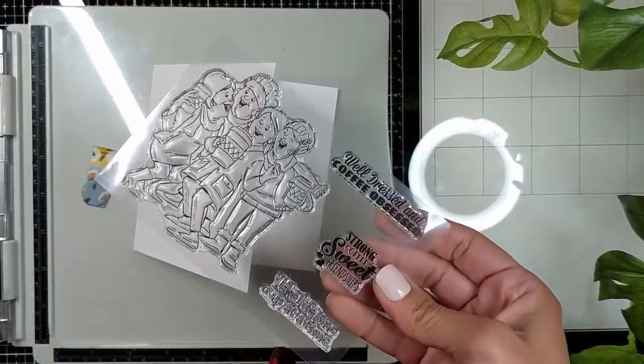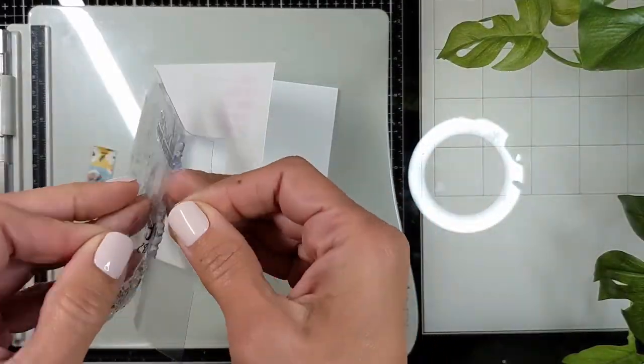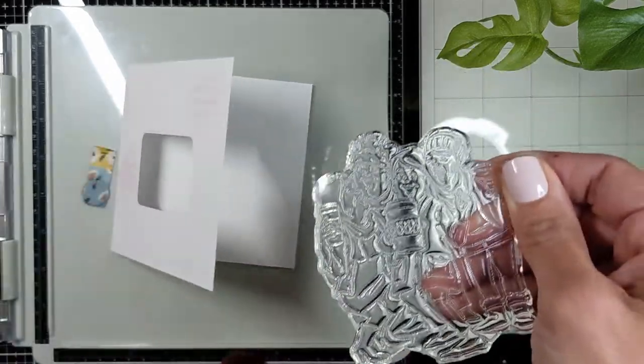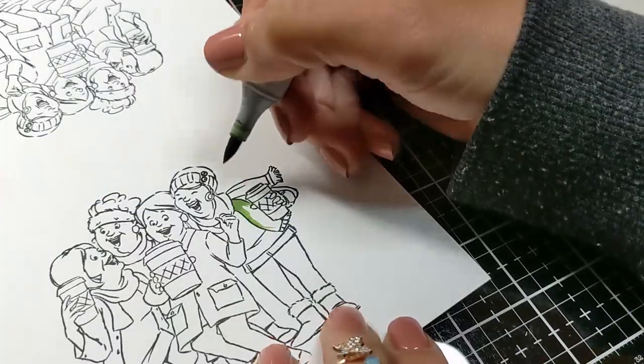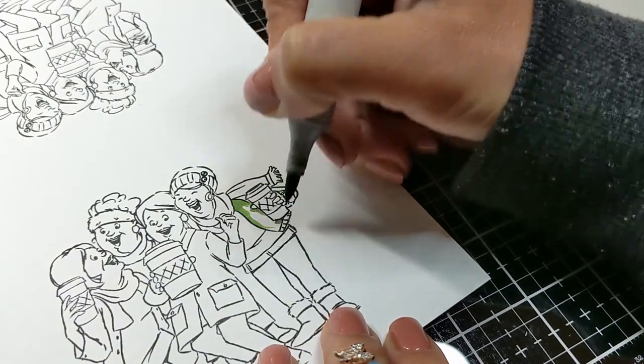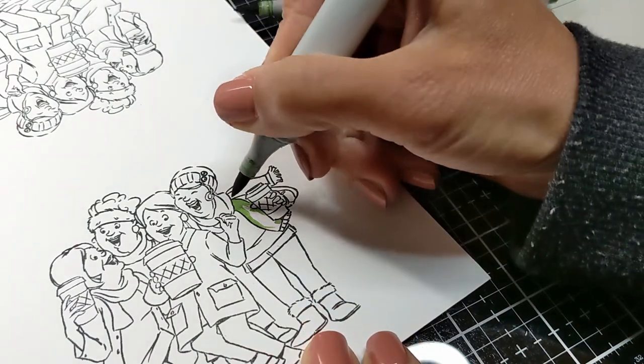And then I'm going to use the Latte Love stamp set, also from Art Impressions. I'm going to stamp it with Memento Tuxedo Black ink, which is Copic friendly, and then use my Copic markers to color these cute girls.